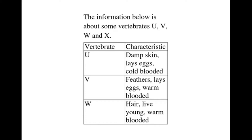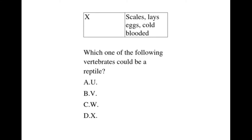The information below is about some vertebrates U, V, W, and X. U has damp skin, lays eggs, and is cold-blooded. V has feathers, lays eggs, and is warm-blooded. W breathes air and gives birth to live young, and is warm-blooded. X has scales, lays eggs, and is cold-blooded. Which one of the following vertebrates could be a reptile?